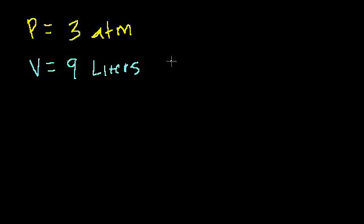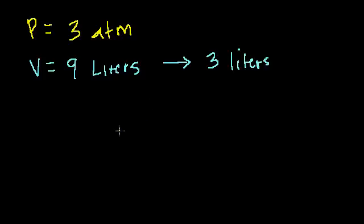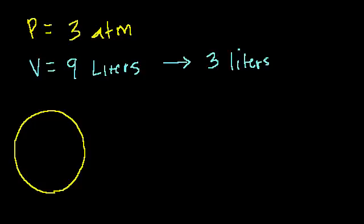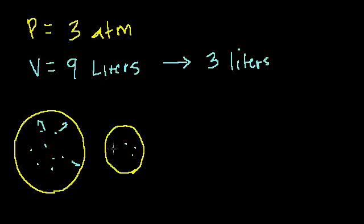What will the pressure become if my volume goes from 9 liters to 3 liters? From the first ideal gas equation video, you can kind of have the intuition — and this is important — we're holding the temperature constant. In our original intuition behind the ideal gas equation, if we have a certain number of particles with a certain amount of kinetic energy exerting a certain pressure on their container, and if we were to make the container smaller, we have the same number of particles, n doesn't change, the average kinetic energy doesn't change, so they're just going to bump into the walls more. When the volume goes down, the pressure should go up.